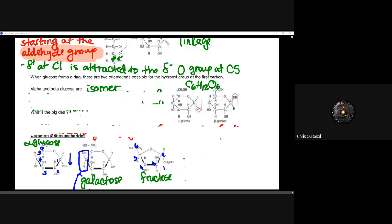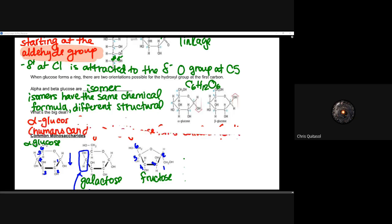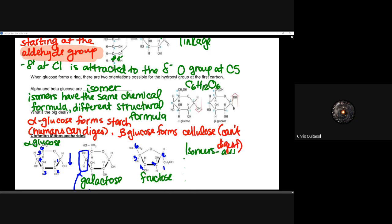When glucose forms a ring, there are two orientations possible for the hydroxyl groups at the first carbon. Alpha and beta glucose are isomers of each other — isomers have the same chemical formula but a different structural shape. Alpha glucose forms starch, which humans can digest, but beta glucose forms cellulose, which humans cannot digest naturally. Those structural differences have a larger impact on the function of biological structures.